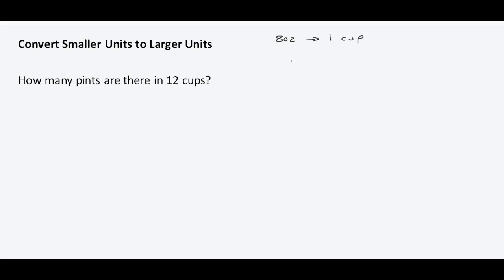Let's go ahead and do some conversion. We know that eight ounces make one cup and two cups make a pint. The ratio of cups to pints is 2 to 1. So how many pints are there in 12 cups? Cups to pints is equal to 12 to x, using the equal ratio approach. So 2 over 1 is equal to 12 over x.